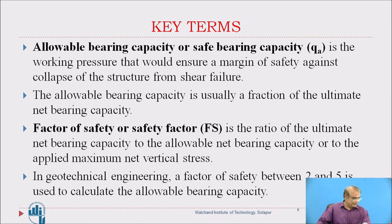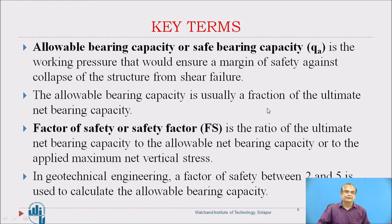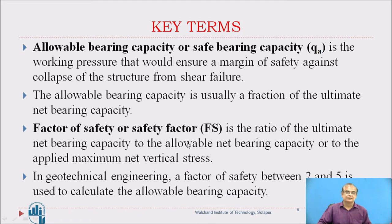Allowable bearing capacity, or safe bearing capacity, is the working pressure that would ensure a margin of safety against collapse of the structure from shear failure. It is obtained using a fraction of the ultimate net bearing capacity with a factor of safety. Factor of safety is the ratio of ultimate net bearing capacity to the allowable net bearing capacity or applied maximum net vertical stress. Common values of factor of safety used are between 2 to 5, depending upon site conditions.